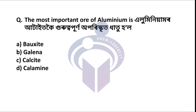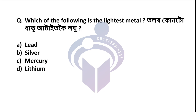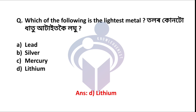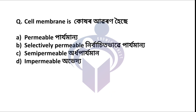Next question: The most important ore of aluminum is bauxite. Next question: Which of the following is the lightest metal? The answer is option D: lithium. Next question: The cell membrane is — the correct answer is option C: semi-permeable, meaning it is a semi-permeable membrane.